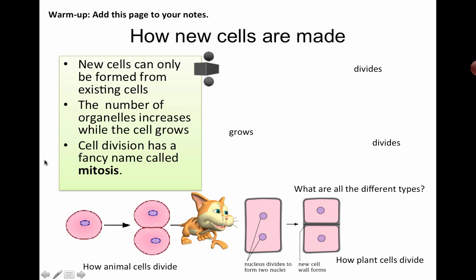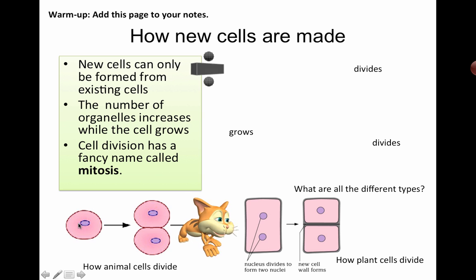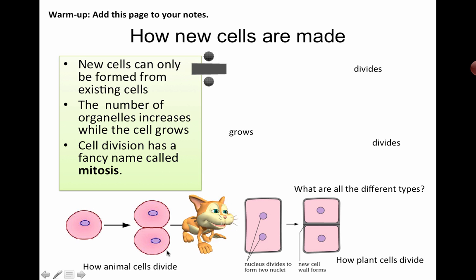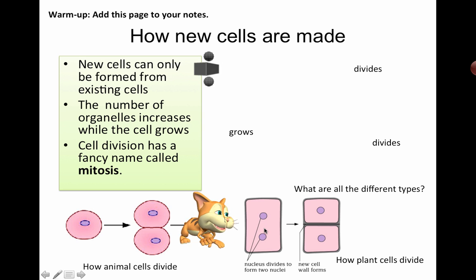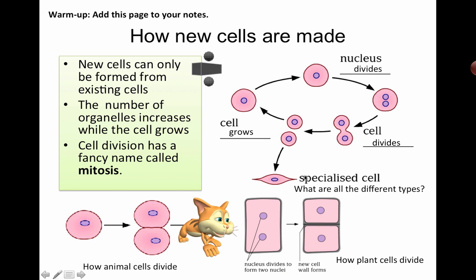The easiest way to think about it is that one cell gets larger, then imagine it gets squeezed down the middle and pinched, and it turns into two cells. You're going to see this in many different types of animations in class. A plant cell does the same thing, but a plant cell is a little more tricky because it has something called a cell wall around the outside that makes it very rigid, so as it's preparing to divide, it's going to do it in a more structured method.